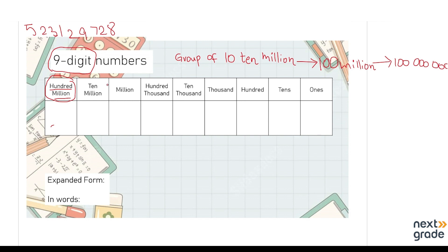We have to input it into a place value chart. First, we look at the ones place — we have 8, so in expanded form we write 8. At the tens place we have 2, so it becomes 20. At the hundreds place we have 7, so it becomes 700. At the thousands place we have 9, so it becomes 9,000.